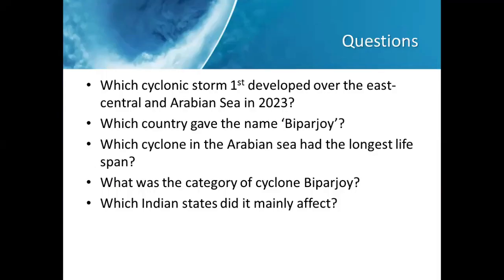Key questions from this lesson: Cyclone Biparjoy was the first cyclonic storm over the East Central Arabian Sea in 2023. Bangladesh gave it the name Biparjoy. It held the longest lifespan of any cyclone in the Arabian Sea — second was Cyclone Kiar (2019) at 9 days and 15 hours. Biparjoy was Category 3. It mainly affected Gujarat's Saurashtra-Kutch region and then Rajasthan.